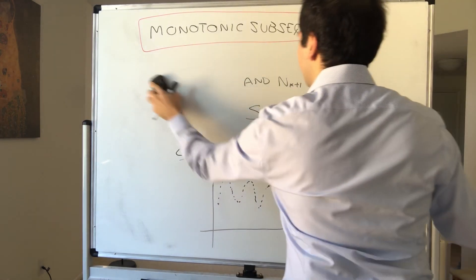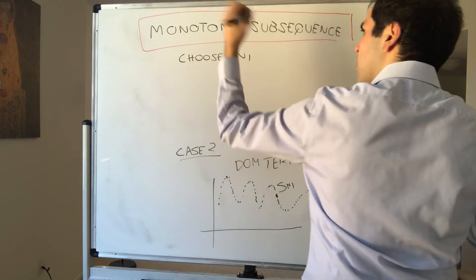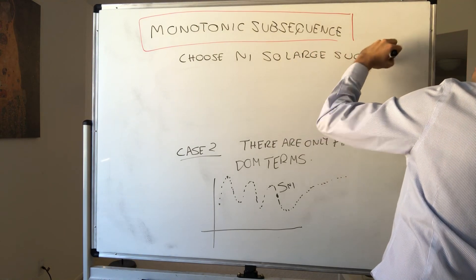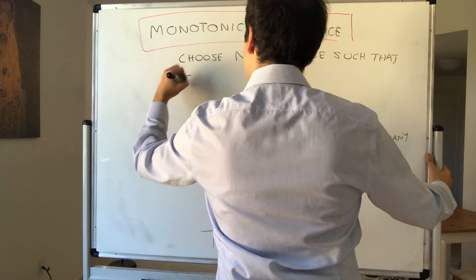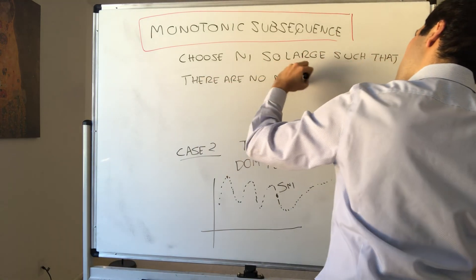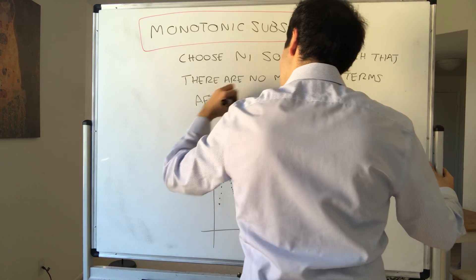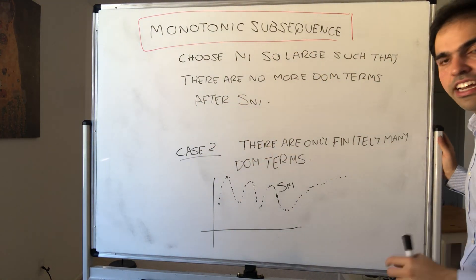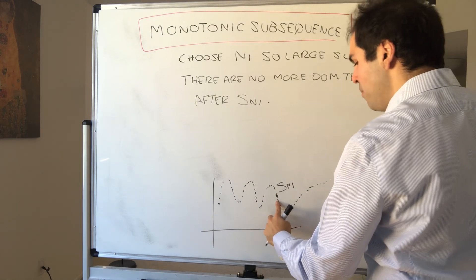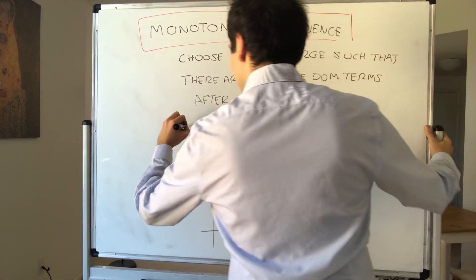And then, here's what's happening. So then, let's just choose Sn1 that is after all those peaks. Choose N1 so large such that there are no more peaks after Sn1.